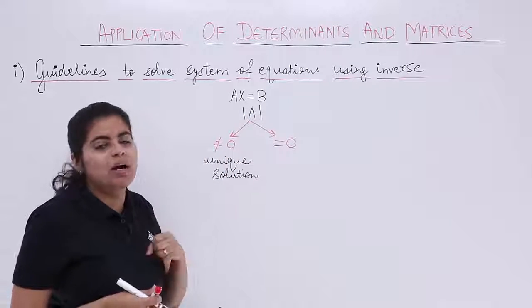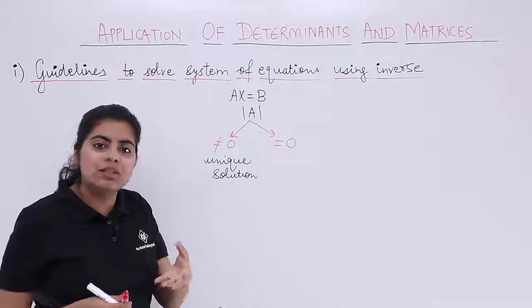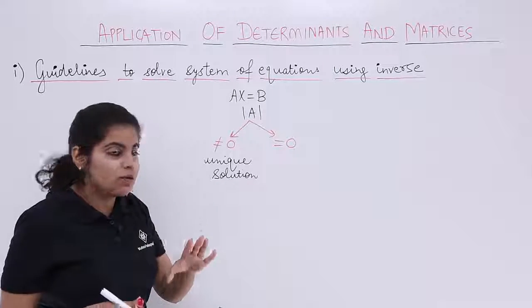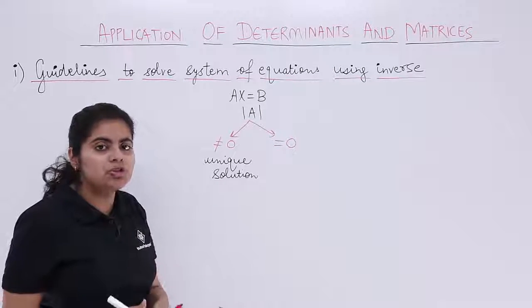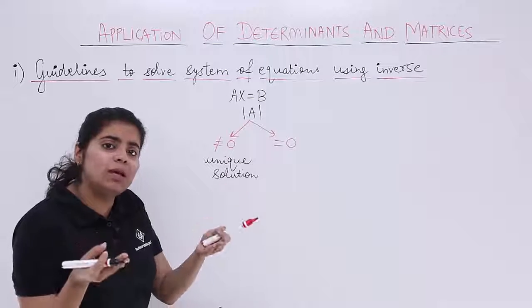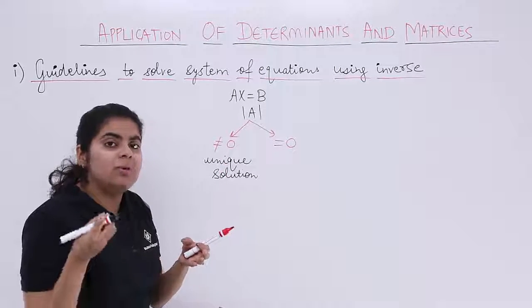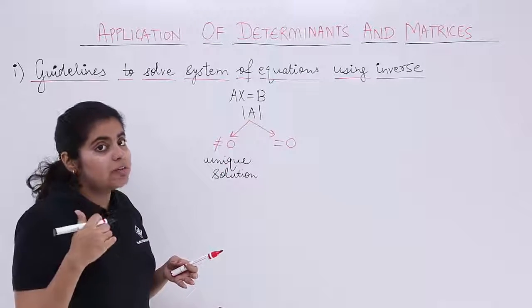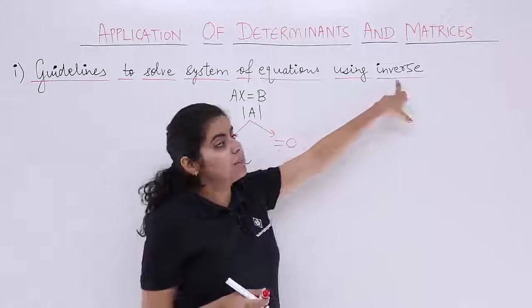determinant value is say minus 5 or plus 4 or plus 32. That means it is not 0. That means we would have a unique solution and what would that solution be? That solution will basically be given after we compute the inverse.